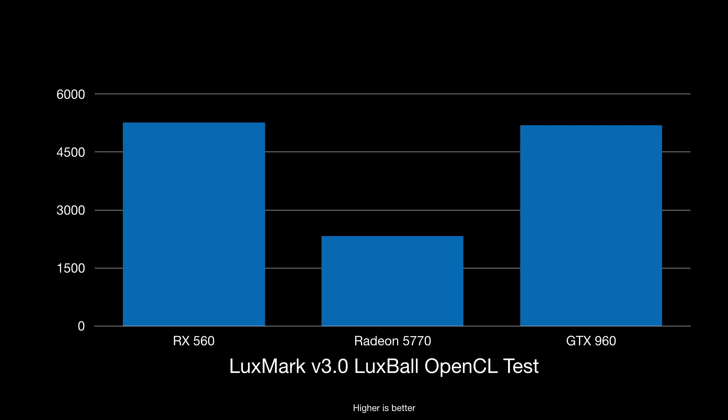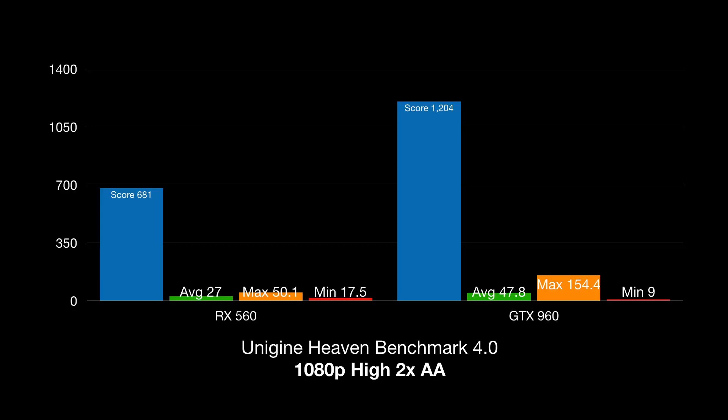The next test I ran is the Luxmark version 3.0 Luxball OpenCL test — higher score is better here. As you can see, the 960 actually came pretty close to the RX 560 in this test. This is a benchmark about OpenCL performance, which NVIDIA cards generally aren't great at, but the 960 does do okay, keeping up with the RX 560 pretty well, with the 5770 coming in last.